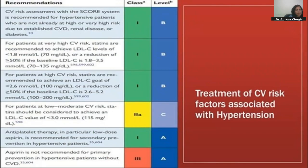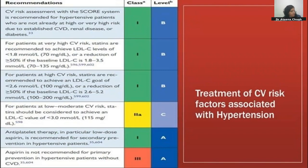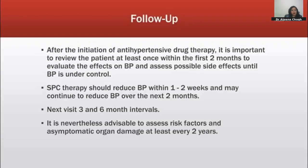Regarding statins in hypertensive patients: the aim is to reduce LDL to less than 50% of baseline or below 70 mg/dL for very high cardiovascular risk, below 70 mg/dL for high CV risk, below 100 mg/dL for moderate risk, and around 150 mg/dL for low to moderate risk. There is no role for aspirin as primary prevention in hypertension. Aspirin must be given as secondary prevention to all patients who have had a prior CVD or stroke episode.